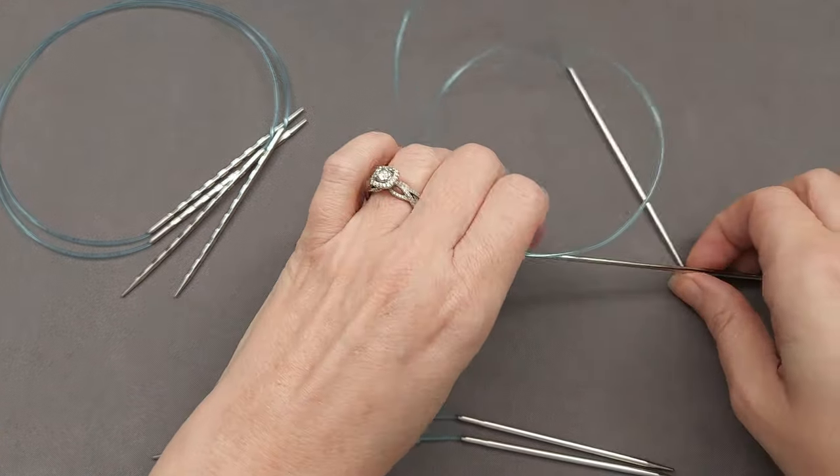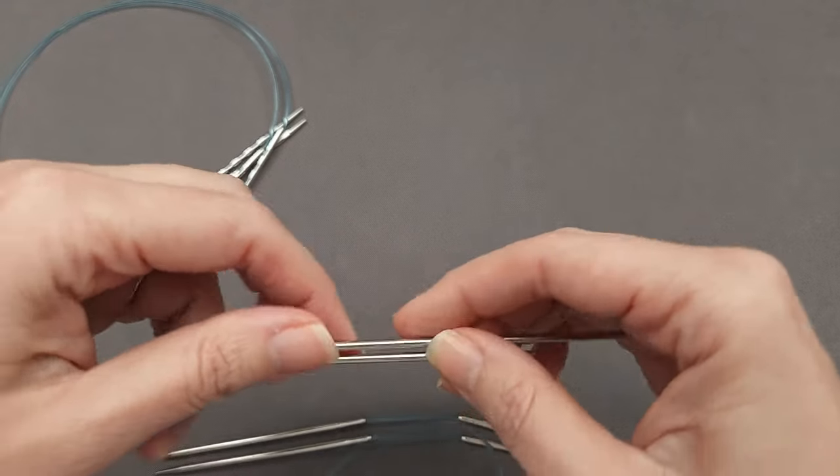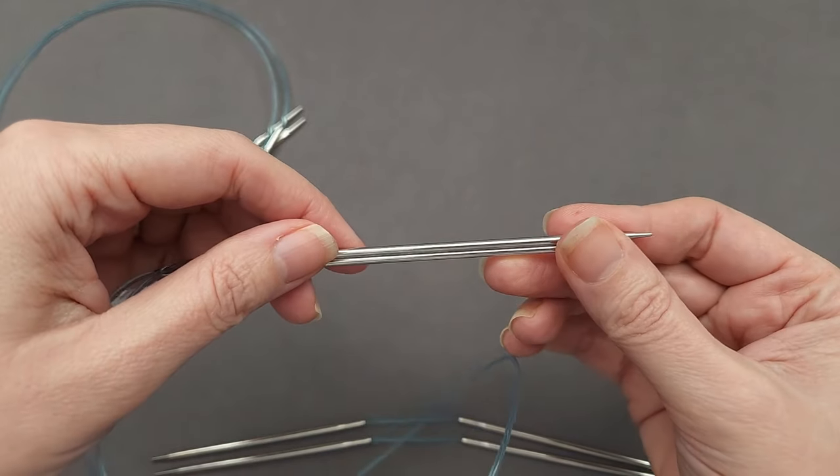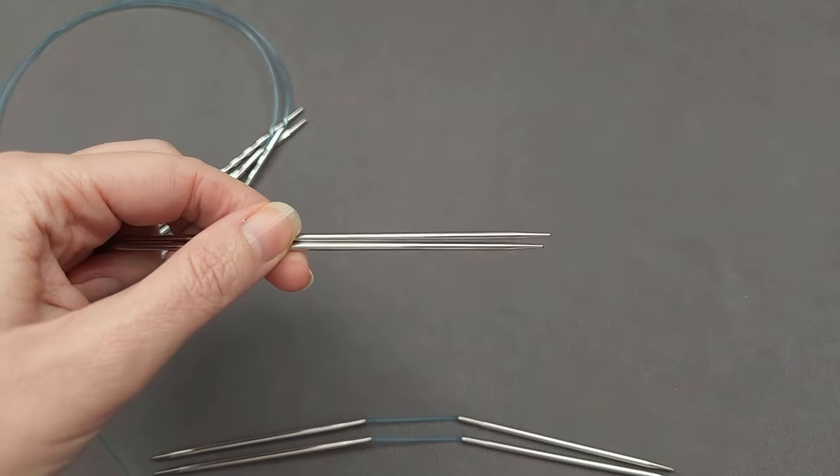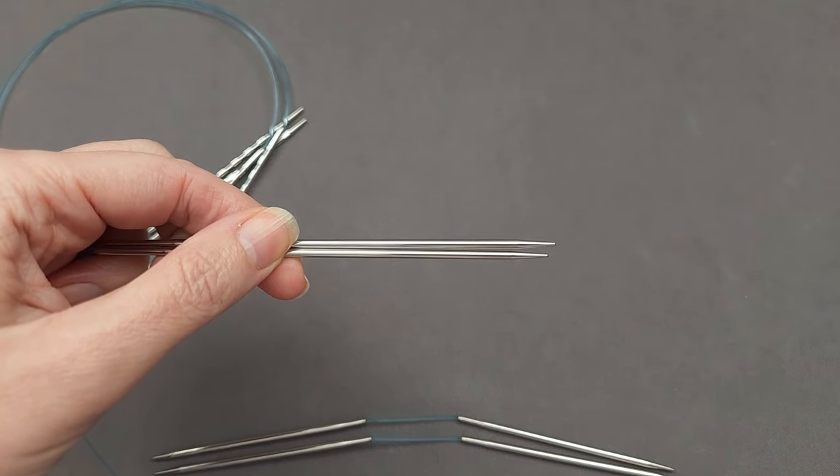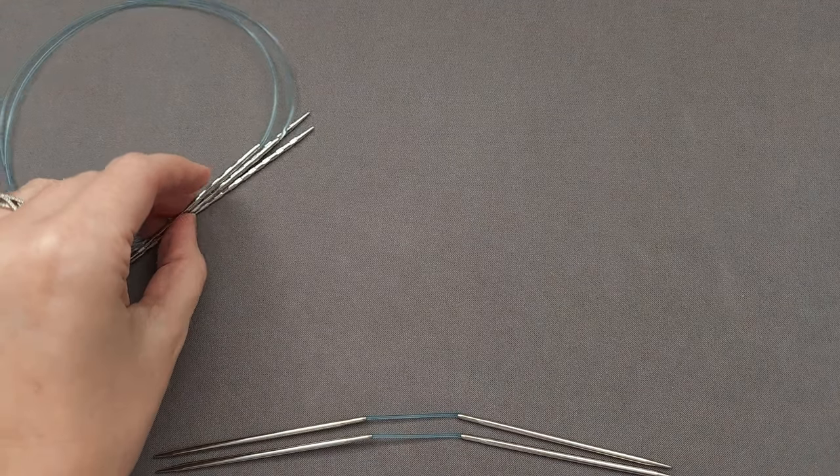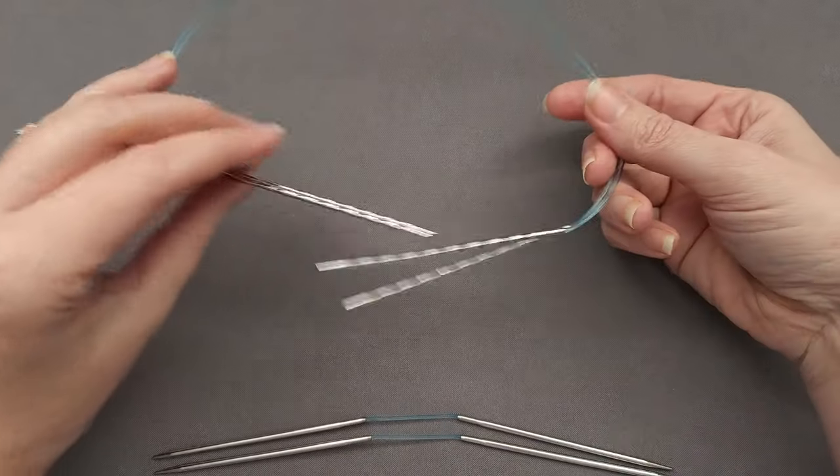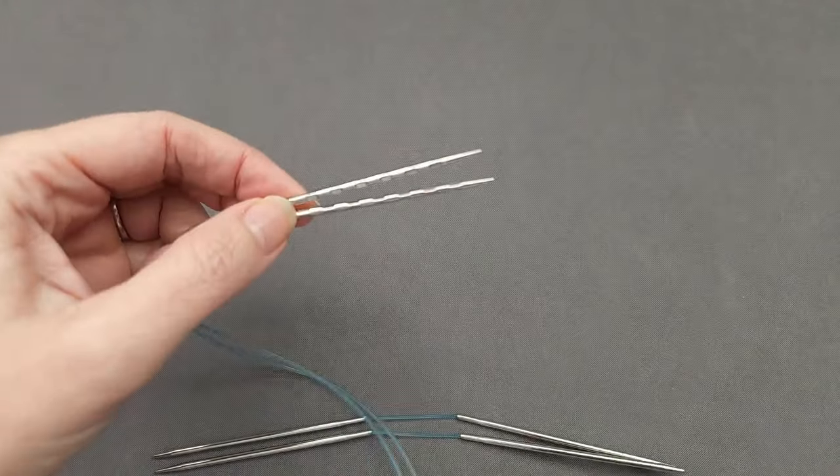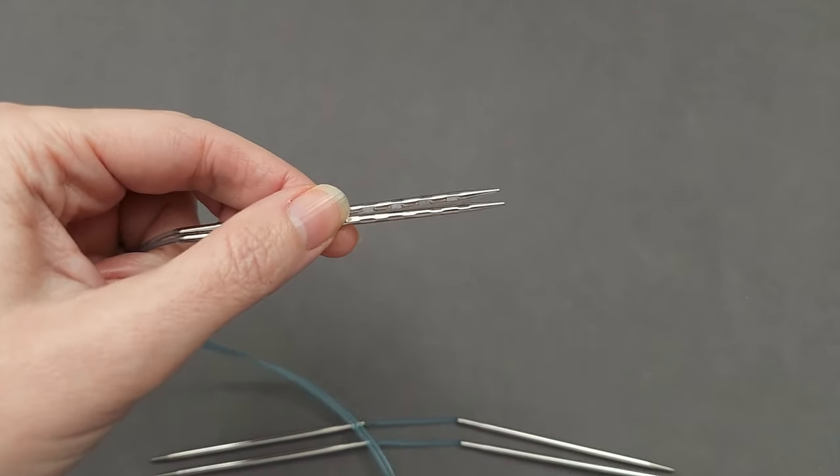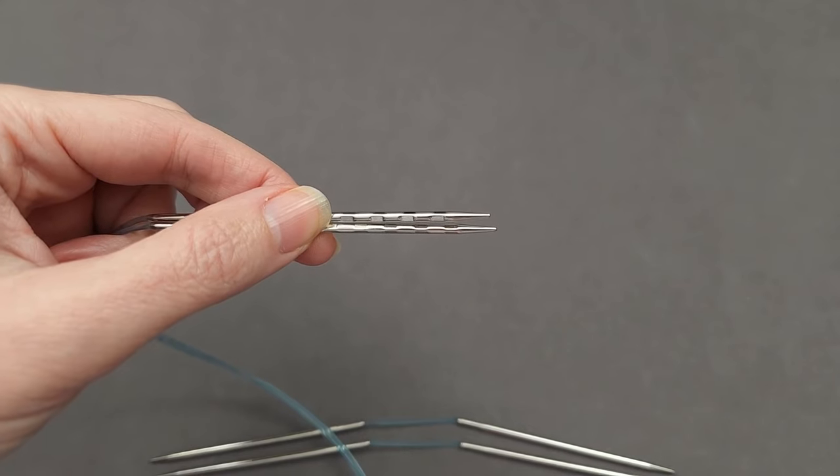If you like the magic loop method and work on one long circular needle, you'll start by holding the needles in your left hand with the needle tips pointing to the right. Or if you prefer to cast on using two long circular needles, you'll hold one tip from each needle in your left hand, again with the tips pointing towards the right.